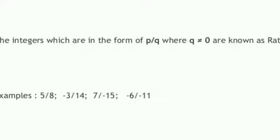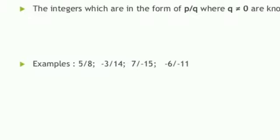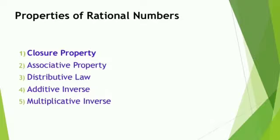So, जो definition है हमारी P upon Q, इस form में हो, Q not equal to 0, means denominator is not 0.